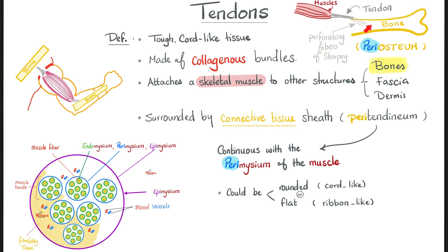When your tendon reaches into the bone, it perforates pieces of the bone. These are called the perforating fibers of Sharpey. Just like your muscle is surrounded by perimysium, your bone is surrounded by periosteum, onto which the tendon attaches. Your tendon itself is surrounded by peritendinium, which is continuous with the perimysium of the muscles. The perimysium is continuous with the peritendinium, and the peritendinium attaches into the periosteum of the bone. Peri means around; osteo means bone.